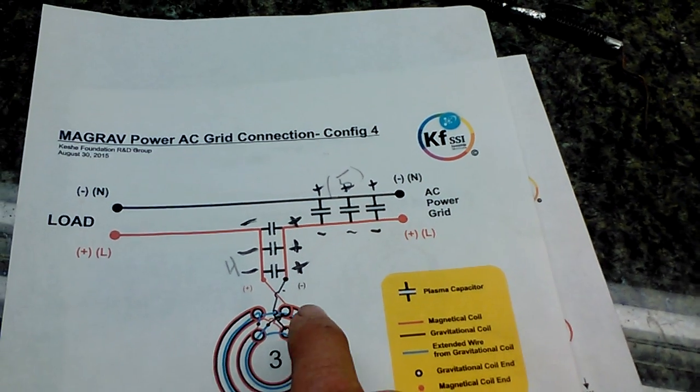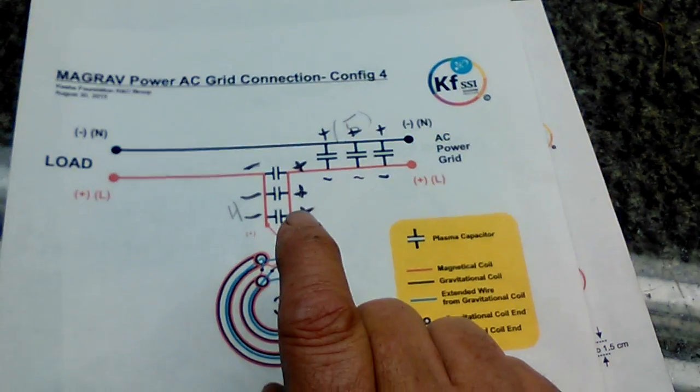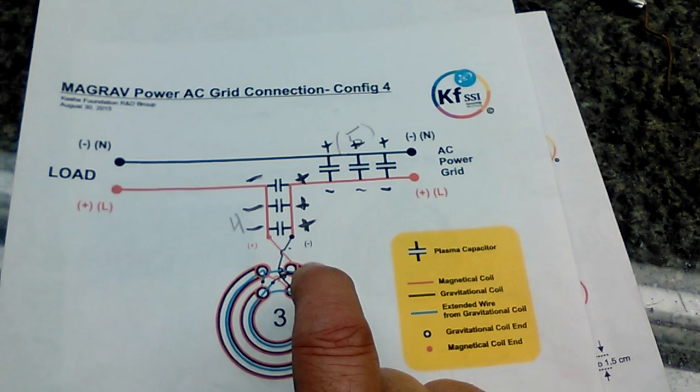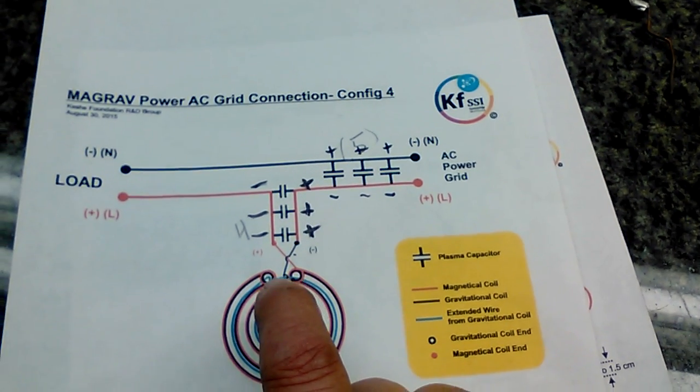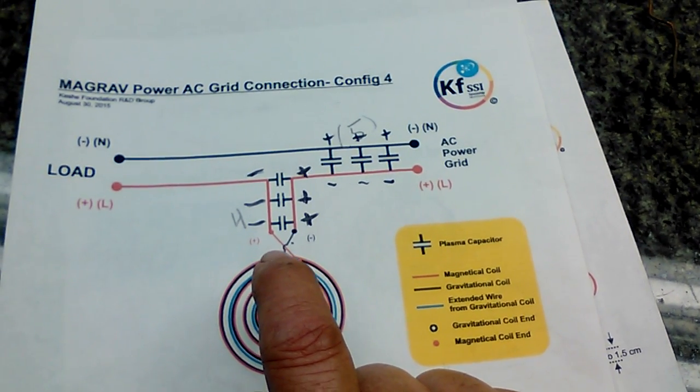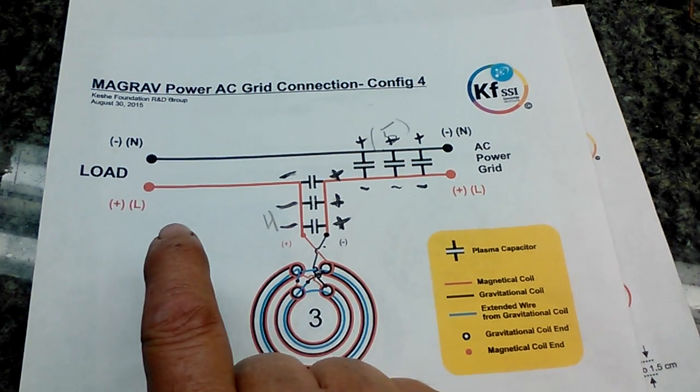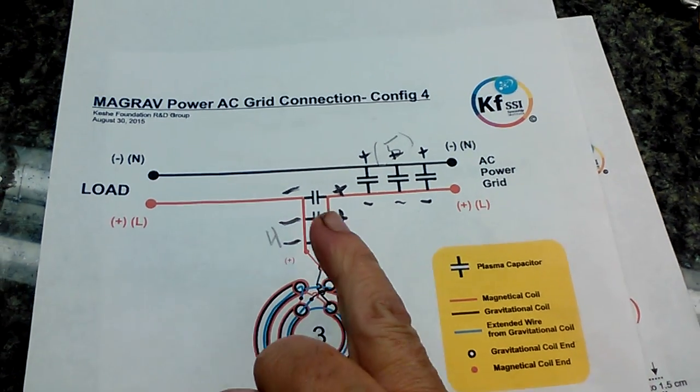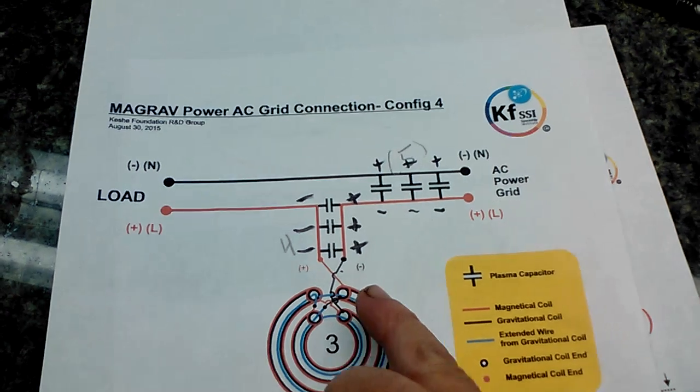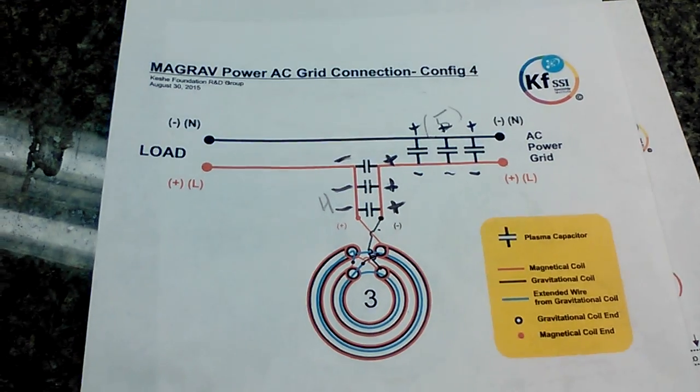Then if we come over here and we're jumping across, we have the negative side picking up the positive wire coming out of the McGrath and the positive side picking up the negative wire going into the McGrath.